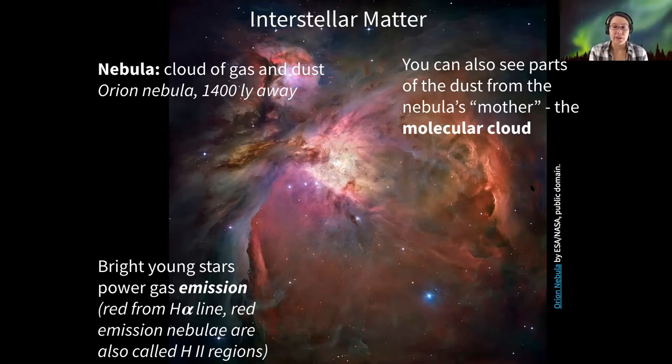So already by looking at pictures of interstellar matter, we can start to tease out what types of material are located where. The bright points, of course, those are stars. So that's a nebula.